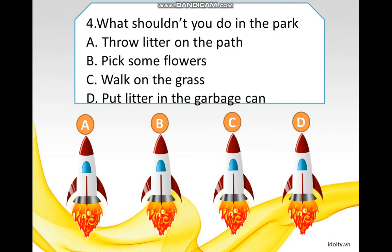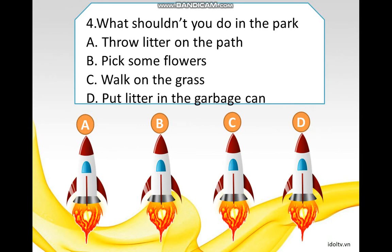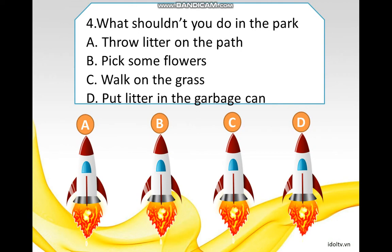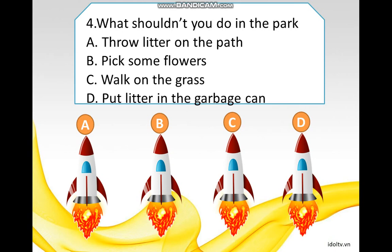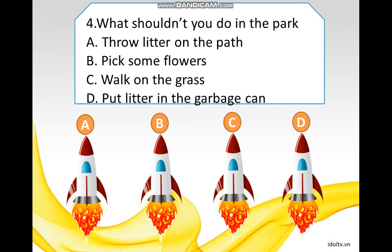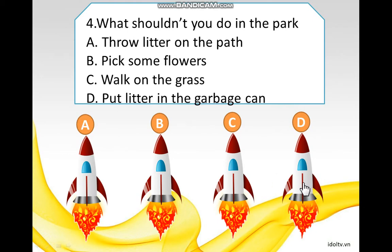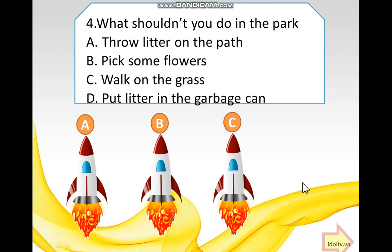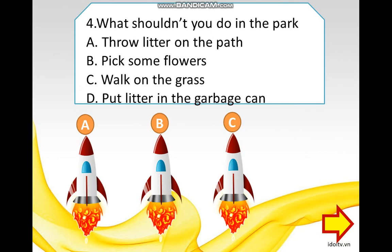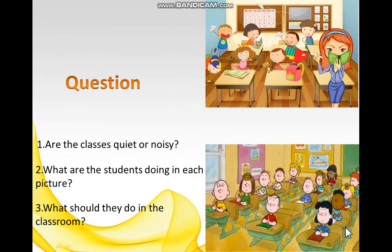What shouldn't you do in the park? A) Throw litter on the path, B) Pick some flowers, C) Work on the grass, D) Put litter in the garbage can. The answer is D — put litter in the garbage can. And now let's get started.